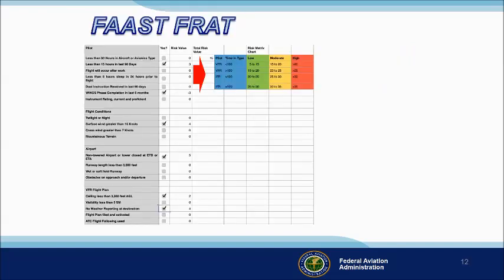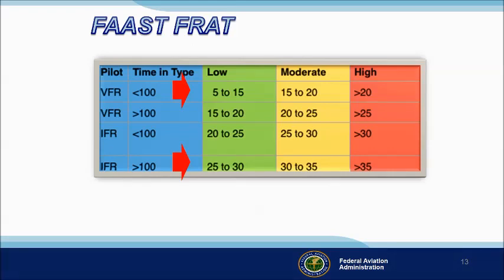In this example, the pilot has fewer than 15 hours in the last 90 days, but a Wings phase was completed in the last 6 months. The risk of low recent experience is canceled by the Wings phase completion. Surface winds will be greater than 15 knots, resulting in a risk value of plus 4. The flight will be to a non-towered airport, ceiling will be less than 3,000 feet, and there is no weather reporting at the destination. This results in a total risk value of 15. Looking at the risk matrix chart, a total risk value of 15 is between low and moderate for a VFR pilot with fewer than 100 hours time and type, but well within the low range for an IFR pilot with more than 100 hours time and type.